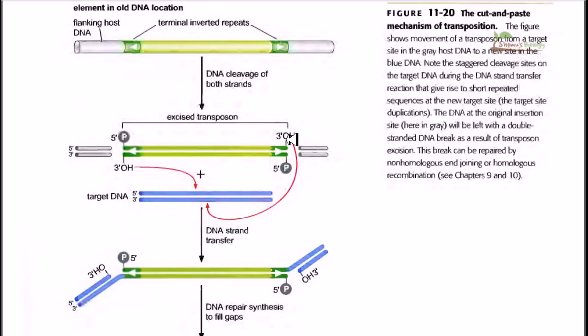By locating this site, the oxygen of the 3' hydroxyl will attack the phosphodiester backbone because it can act as a nucleophile. As a result of this attack, it will hold onto it and incorporate the strand which needs to be transposed onto the target DNA.